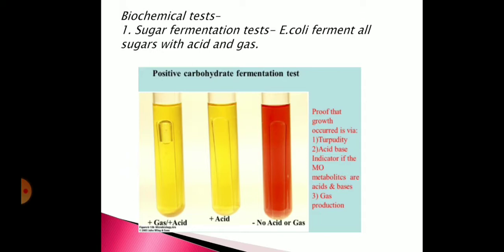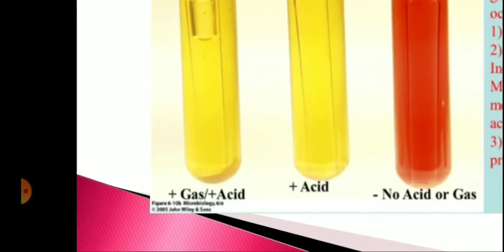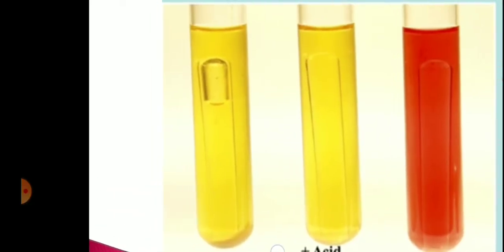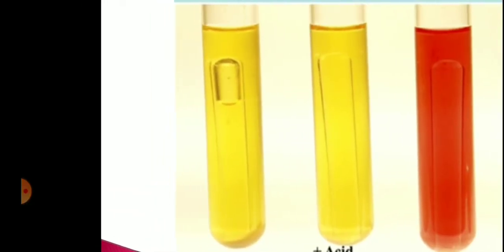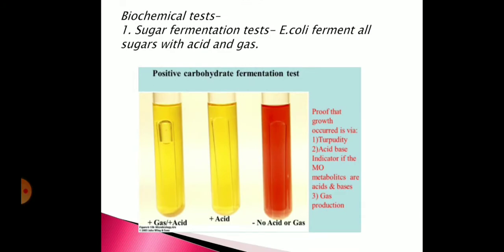Looking at the biochemical characteristics of the organism, the first test is sugar fermentation. E. coli ferments all sugars — whether lactose, glucose, mannitol, or sucrose — and produces both acid and gas, as seen in the first tube. The first tube shows acid and gas production, the second shows only acid, and the third tube is negative. E. coli ferments all sugars with acid and gas.